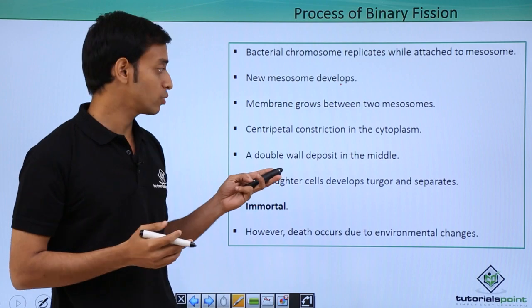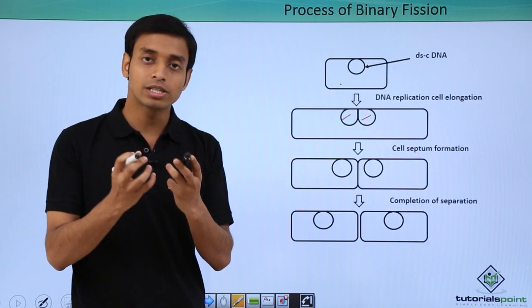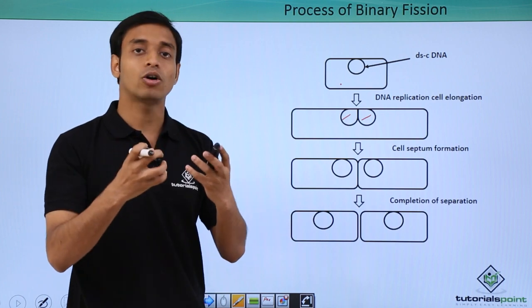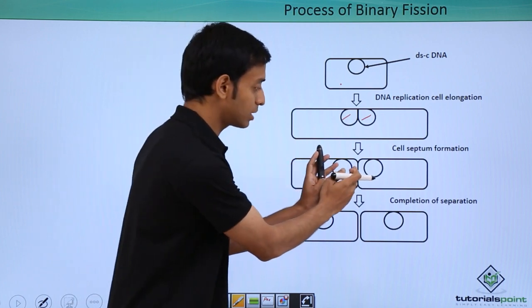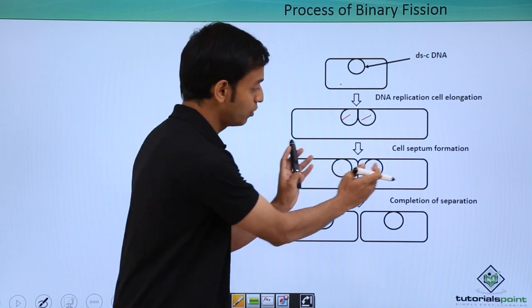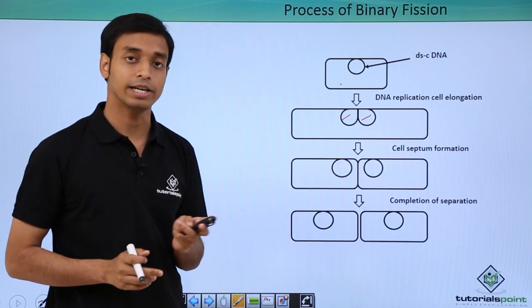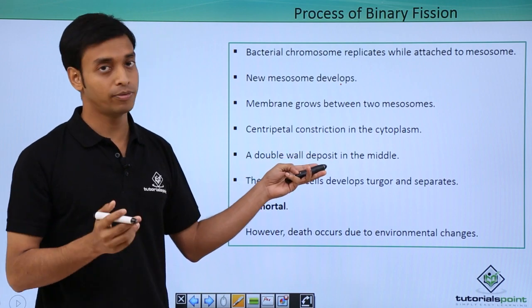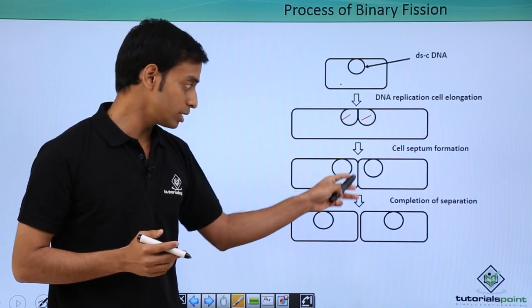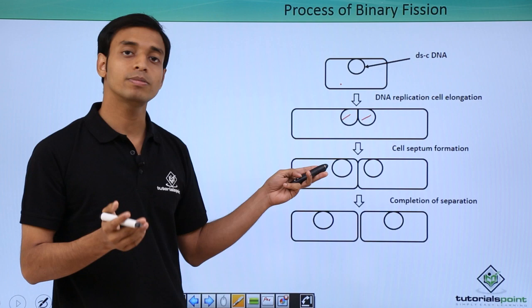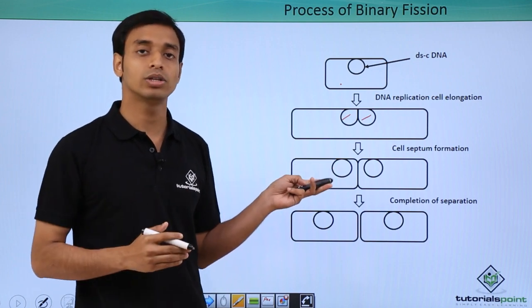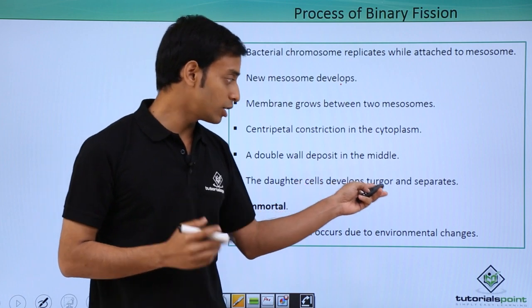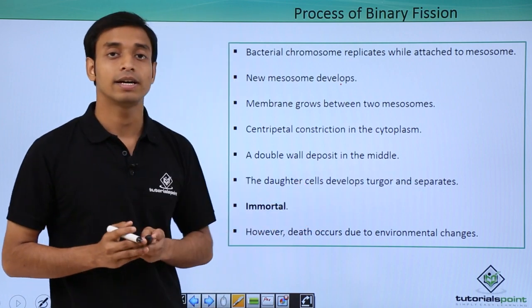Centripetal constriction in the cytoplasm will take place. What do we mean by that? The cytoplasm of these two portions will try to constrict inside or centripetally. So all the cytoplasmic content will move in two opposite directions. After this, a double wall deposit will be formed in the middle. As you can see over here, it is formed. It will later on develop into the cell wall.